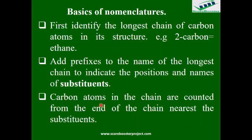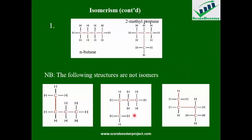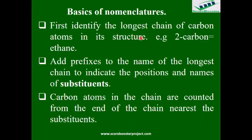Carbon atoms in the chain are counted from the end nearest to the substituent. For example, if you can name a compound as either 2-methylbutane or 3-methylbutane, you choose 2-methylbutane because you need to give the substituent the lowest number possible. This is the rule: always count from the end that gives the substituent the smallest locant number.